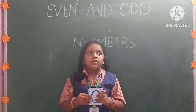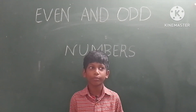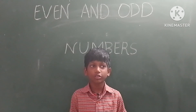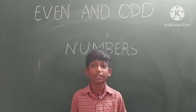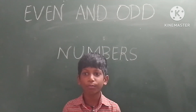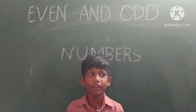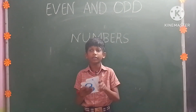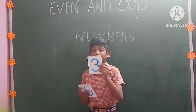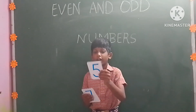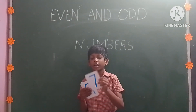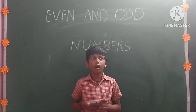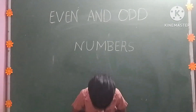Good morning everyone, my name is Ekshvi. I am studying in second class. Today I am going to explain about odd numbers. If any number has 1, 3, 5, 7, and 9, those are called odd numbers. Thank you.